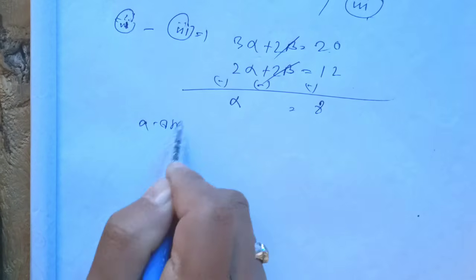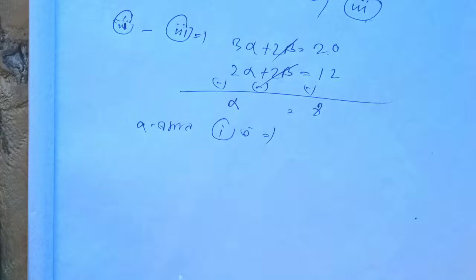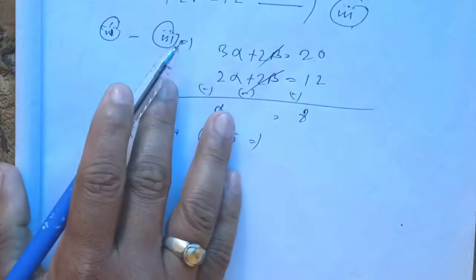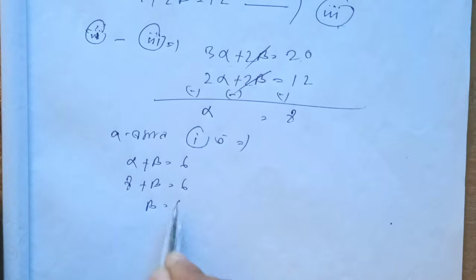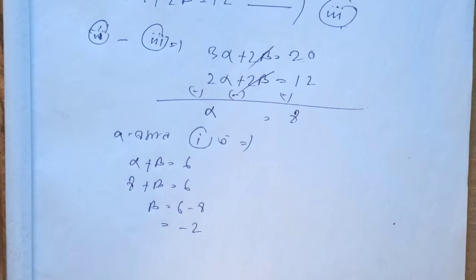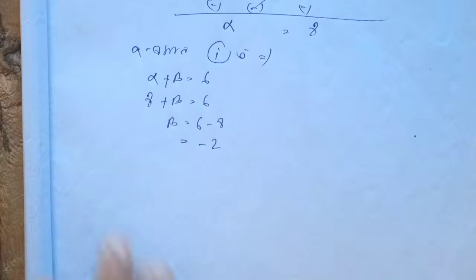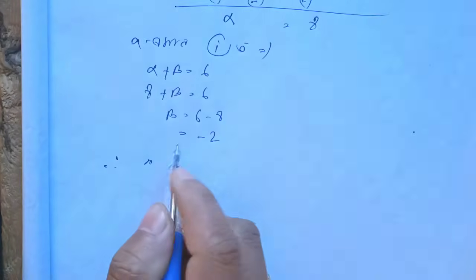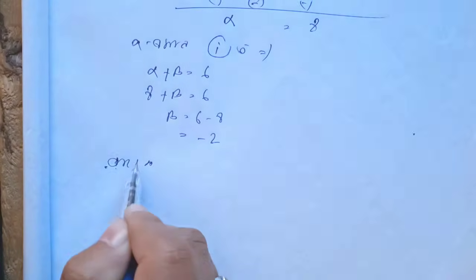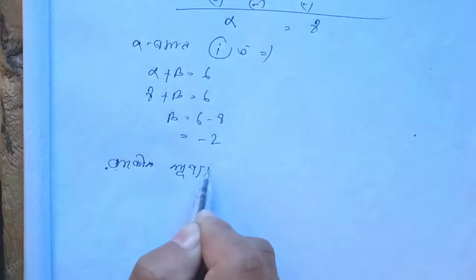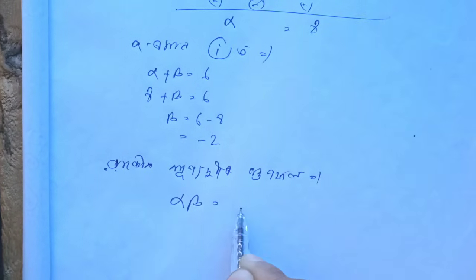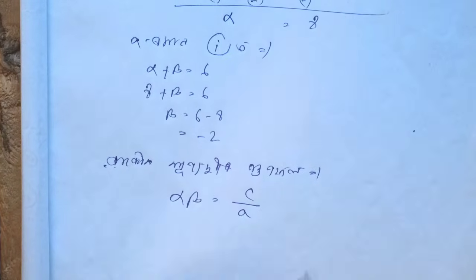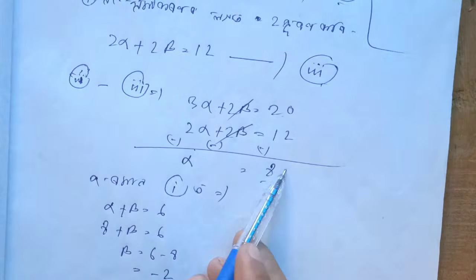Alpha plus beta equals 6. Since alpha equals 8, we get beta equals 6 minus 8, which gives beta equals minus 2. So alpha is 8 and beta is minus 2.